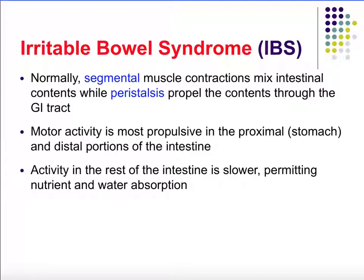Irritable bowel syndrome, or IBS, involves constipation and diarrhea where the bowels aren't working normally. Normally the GI tract performs two major types of contractions: segmental contractions, which contract different segments of the GI tract wall to mix the contents, and peristalsis, which contracts in a wave-like formation to propel contents forward. Segmental contractions mix while peristalsis moves.